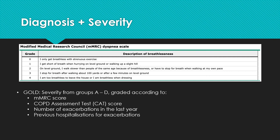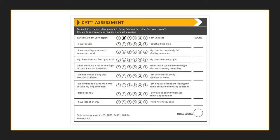In terms of assessing the severity of COPD, there are a couple of tools. The Modified Medical Research Council has a dyspnea scale graded zero to four based on the level of shortness of breath and activities that bring it on. GOLD — the Global Initiative for Obstructive Lung Disease — rates severity from A to D, graded according to the COPD Assessment Test score, the number of exacerbations in the last year, and the number of previous hospitalizations for those exacerbations. The CAT assessment is a questionnaire patients fill out, and based on that we categorize severity.